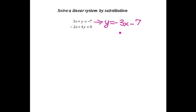Now since I solved for y in the first equation, I'm going to substitute that in for y in the second equation, which gives me my new equation, negative 2x plus 4 times the quantity. I have to remember that when I make my substitution, I put this in parentheses, negative 3x minus 7 equals 0.